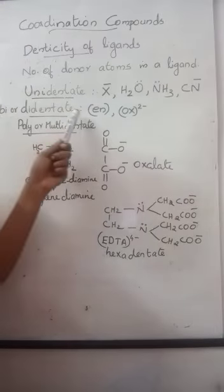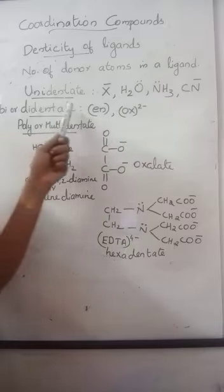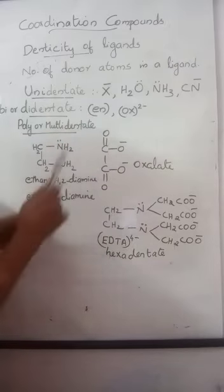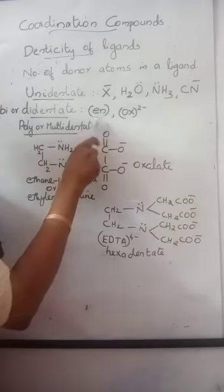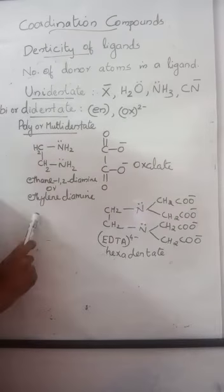Then, bidentate ligand. Bidentate means they contain two donor sites. Example: en, which means ethane-1,2-diamine, also called ethylenediamine.